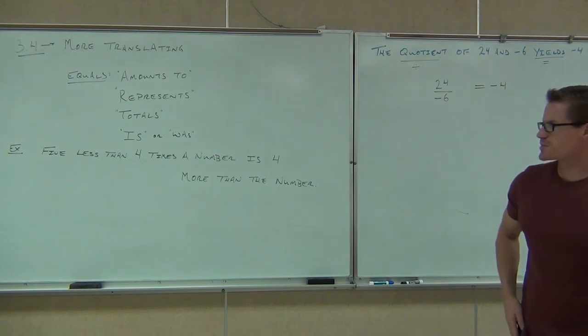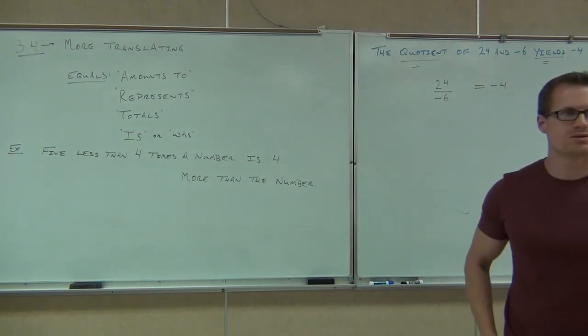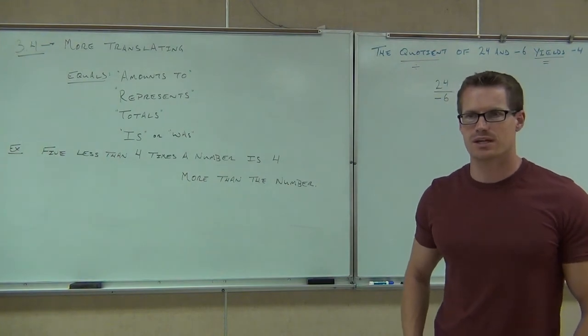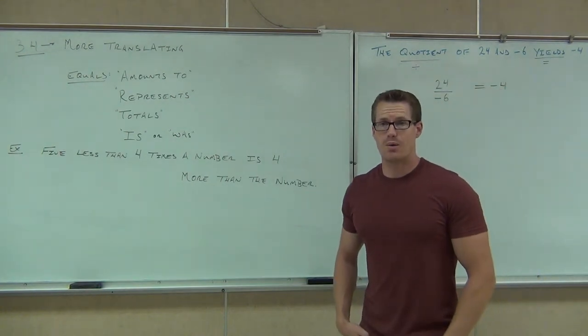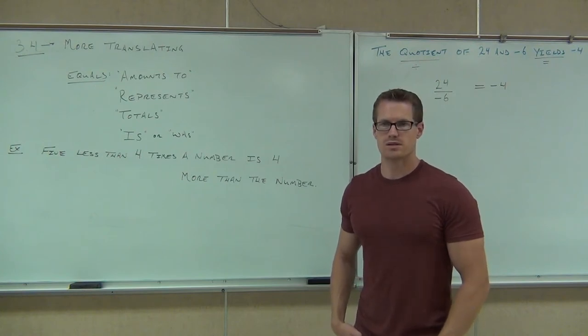Five less than four times a number is four more than the number. Wow, if we don't have a technique to do this, that can sound awfully confusing, can't it? So let's use the technique that I just showed you. First thing that we're going to want to do, I want you to read through there on your own right now and underline the word that means equals.